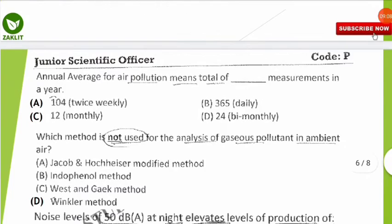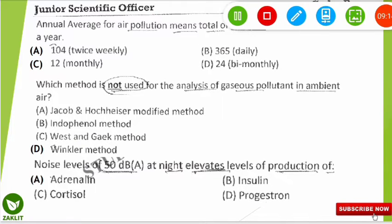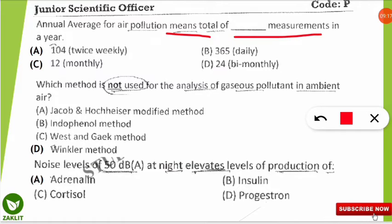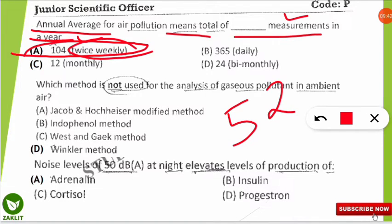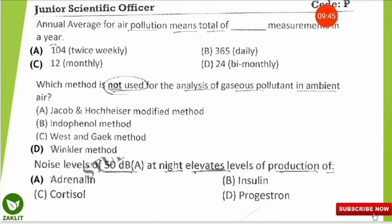The next question: the annual average for air pollution requires a total of how many measurements in a year? The correct option is A — 104 measurements per year. There are 52 weeks in a year, and measurements must be taken twice weekly, resulting in 104 measurements annually.